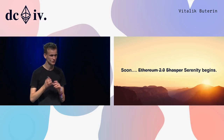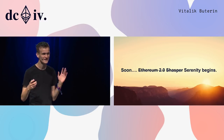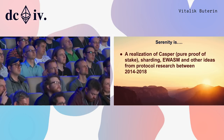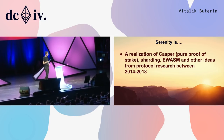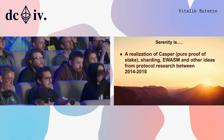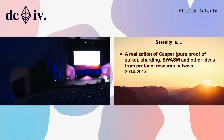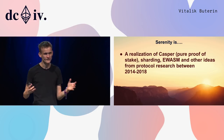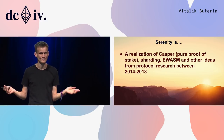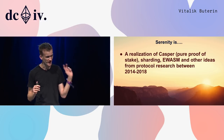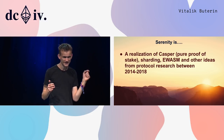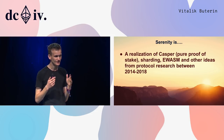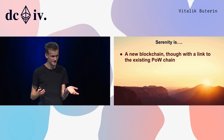Serenity begins! So what is Serenity? It's the fourth stage after Frontier, Homestead, and Metropolis — with Metropolis broken down into Byzantium and Constantinople, with Constantinople coming very soon. It's a realization of all these different strands of research we've been spending the last four years on — including Casper, not just hybrid Casper, but 100% organic genuine pure Casper.